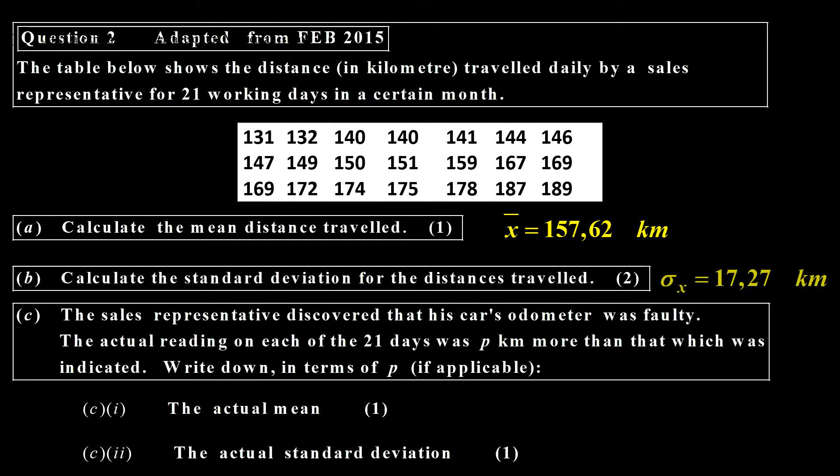The standard deviation is 17.27 kilometers. And now we have a question. What happens to the actual mean? The mean there will be increased by p. So the mean is 157.62 plus p kilometers.